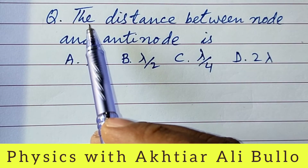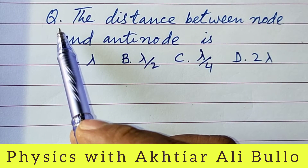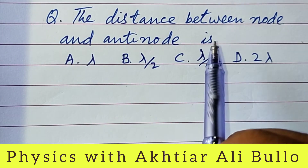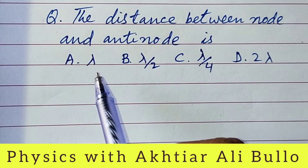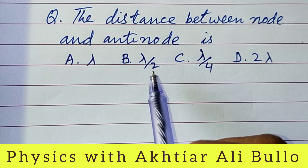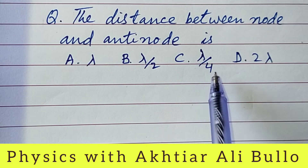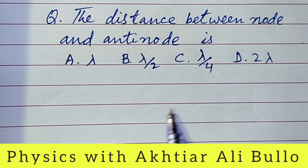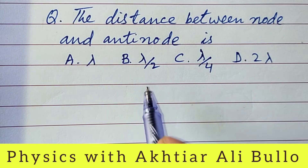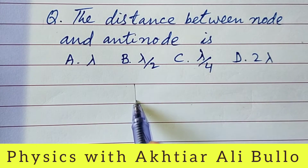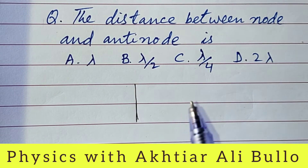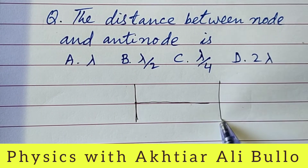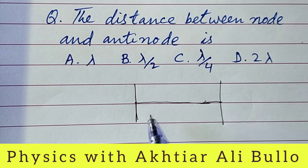The question is: the distance between nodes and antinodes is (A) lambda, (B) lambda upon 2, (C) lambda upon 4, (D) 2 lambda. As we know, in standing waves — also called stationary waves — loops are formed.